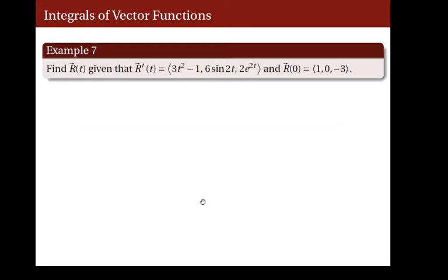For the second example, let us find the function r of t, given that the derivative is the vector-valued function whose coordinates are 3t squared minus 1, 6 sine of 2t, and 2e raised to the exponent 2t, such that r of 0 is the vector 1, 0, negative 3.